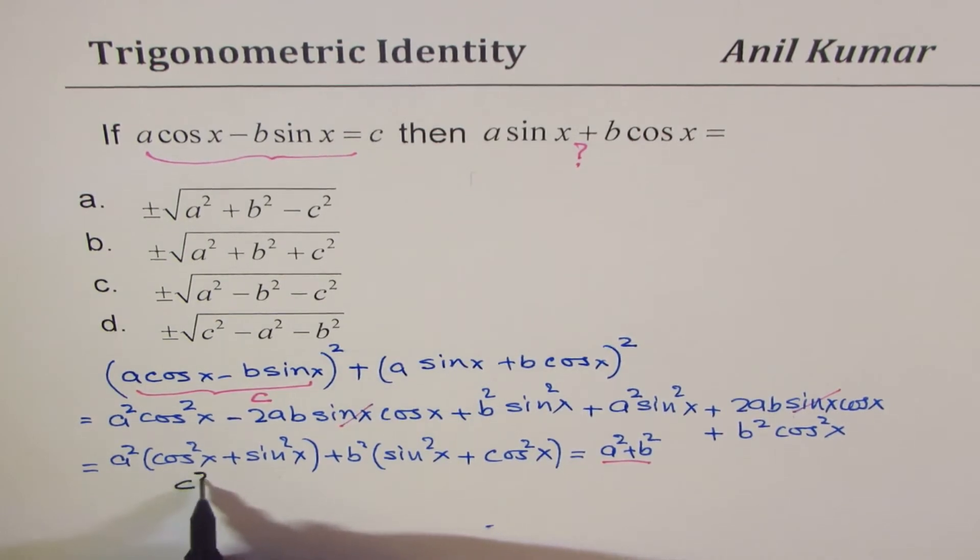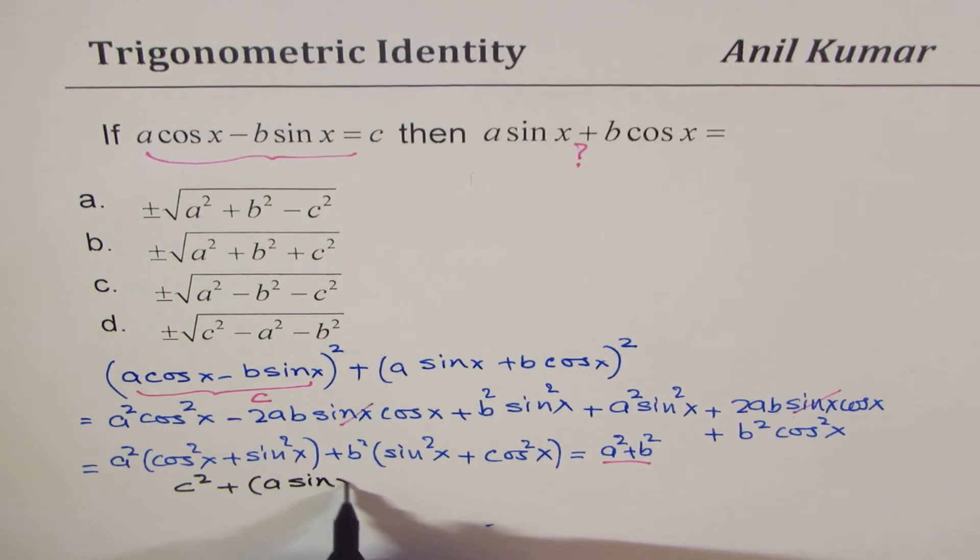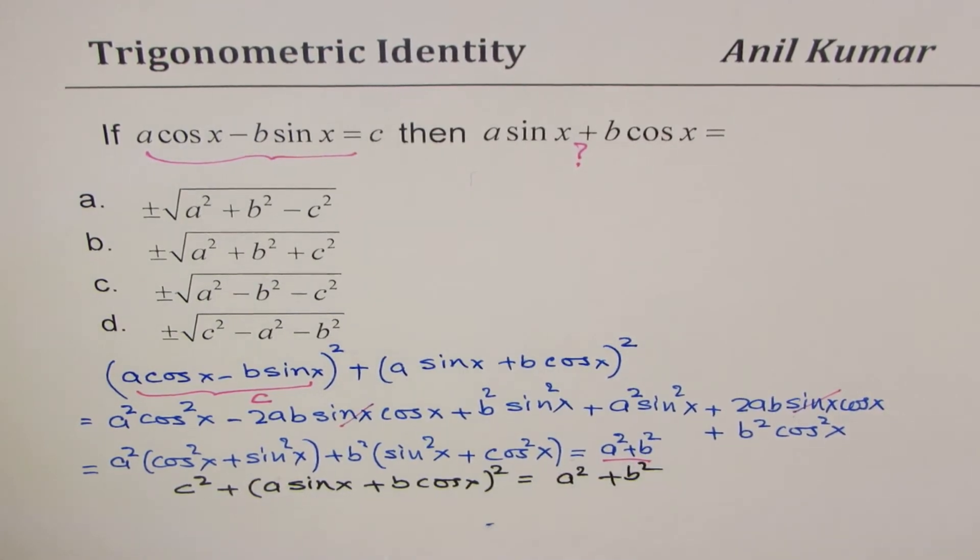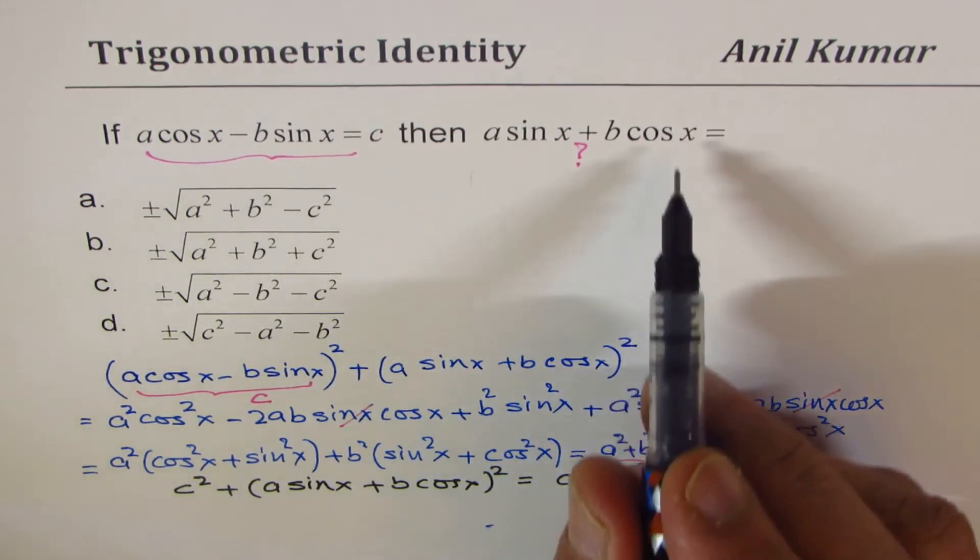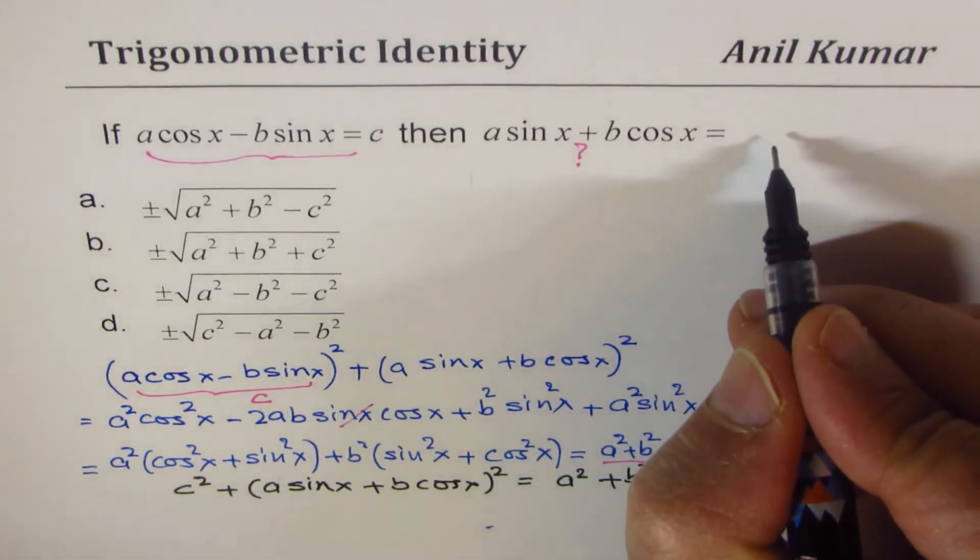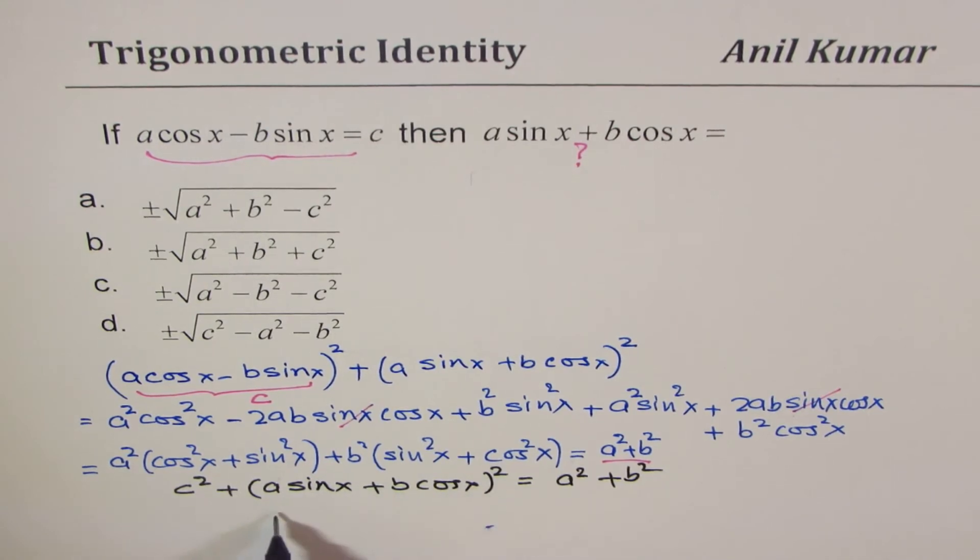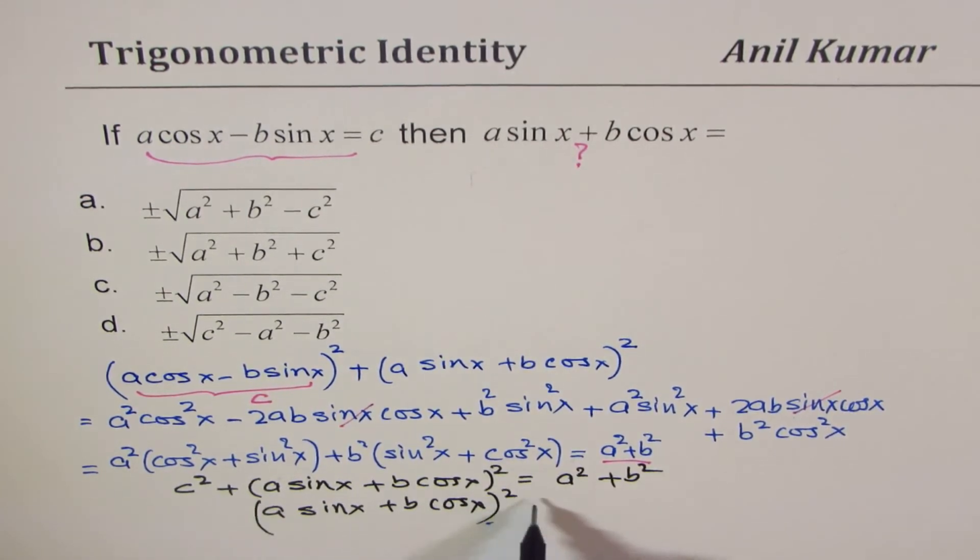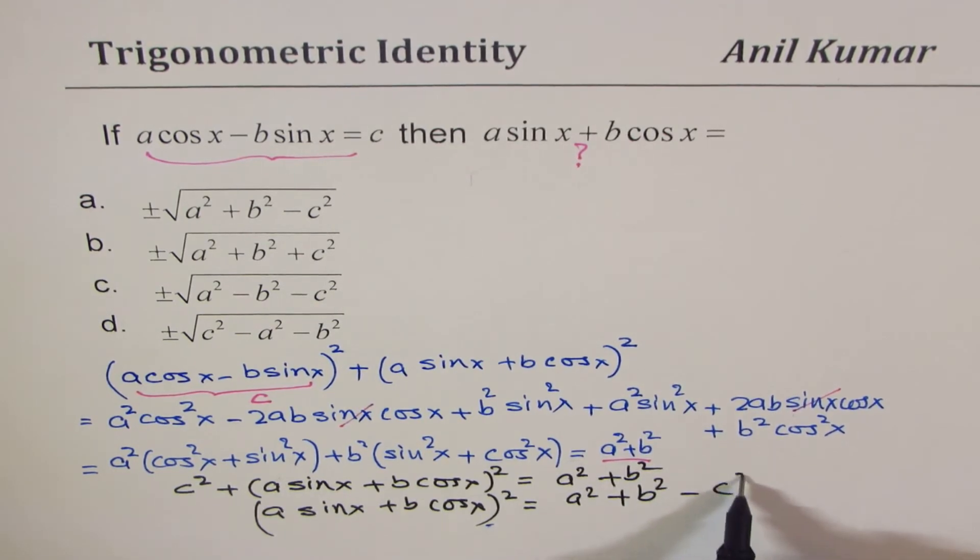So I'll write now here, C square plus A sin x plus B cos x whole square is equals to A square plus B square. Now we know what this is, so we can rearrange, so we get this term as equal to, and then this is square so we can square root. So we know A sin x plus B cos x whole square is equal to A square plus B square minus C square.